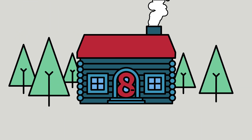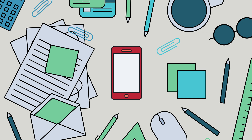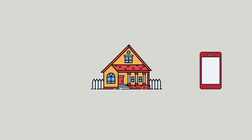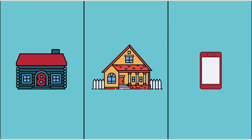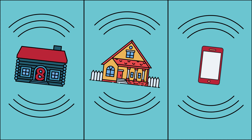One Number Access, or ONA, allows us to plug in a few numbers — even external ones, like a cabin, a relative's, or a personal cell phone without Virtual Office Mobile on it — and try you at each of those numbers. We can choose for it to ring consecutively or simultaneously, for as long as we want.